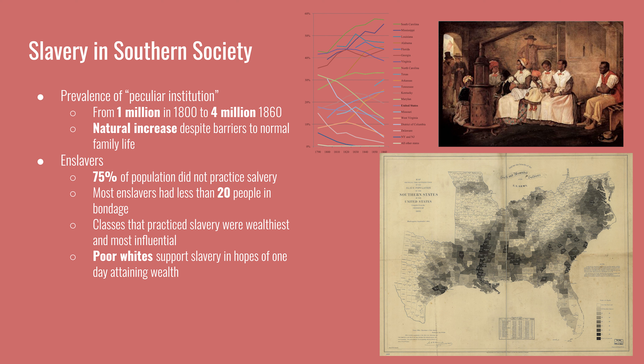But why was the South overall so strong in its support for slavery? The very wealthy aristocratic class had the most influence in state politics and state governments. They convinced the rest of the South that slavery was necessary and part of the South's economic success. Poor whites at the very bottom of the social classes supported slavery because they hoped to one day attain the type of wealth that would allow them to purchase enslaved people. Thus, they didn't want slavery abolished before that happened. As discussed in a previous lecture, economic mobility was possible across different generations.